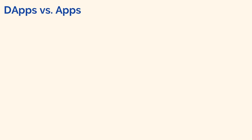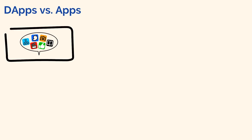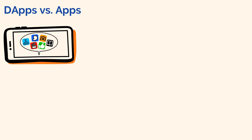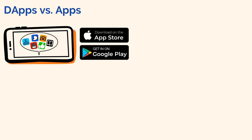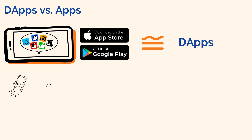I'm sure you are familiar with the concept of apps — the apps that you use on your phone and those available on the App Store and the Play Store. Well, dApps are kind of similar to these applications. But what are some of the characteristics that make dApps unique?